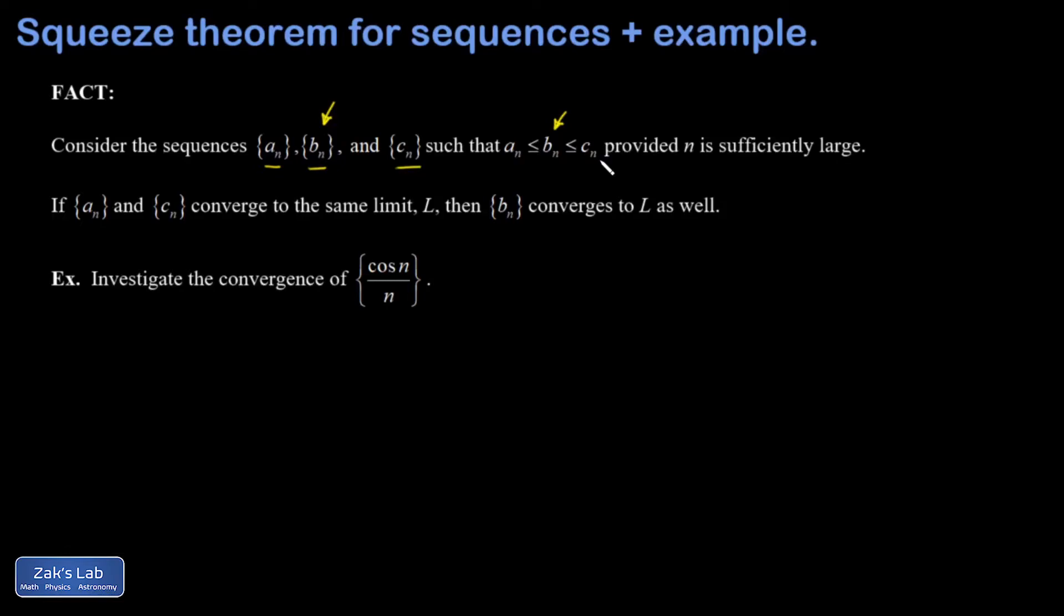One of the most typical examples where we apply this is with sinusoidal functions, because a cosine function is bounded below by negative one and above by positive one. So I want to figure out, does this converge?